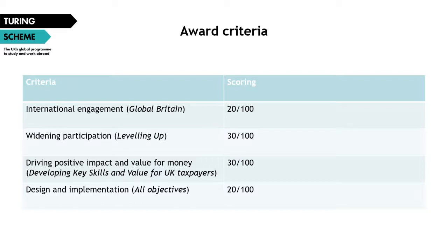In order to be considered for funding, all applications should meet a minimum quality threshold. Assessors must make a judgment on the extent to which applications meet the Turing Scheme program guide defined criteria, and this judgment must be based on the information provided in the application form — anything not included cannot be assumed. Please include anything you think will provide clarity and strengthen the application. The type of project, its complexity, the scale of activities, the applicant's experience and capacity, and the size of the grant requested will all be considered when analyzing applications.